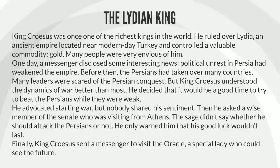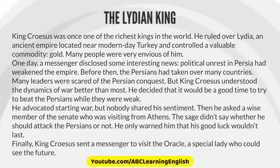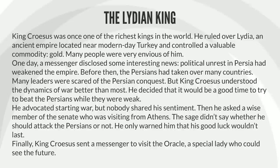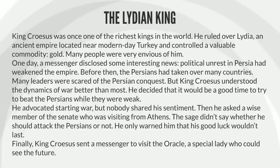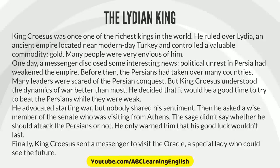King Croesus was once one of the richest kings in the world. He ruled over Lydia, an ancient empire located near modern-day Turkey, and controlled a valuable commodity: gold. Many people were very envious of him. One day a messenger disclosed some interesting news. Political unrest in Persia had weakened the empire. Before then, the Persians had taken over many countries. Many leaders were scared of the Persian conquest. But King Croesus understood the dynamics of war better than most. He decided that it would be a good time to try to beat the Persians while they were weak. He advocated starting war, but nobody shared his sentiment.